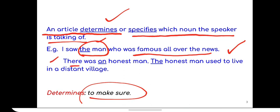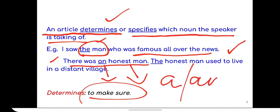Second one is there was an honest man. So do we know which honest man? No, we don't know, right? We don't know him and therefore we use an before it. A and an, these are used when we introduce an object or a noun for the first time. Now the second time when it is introduced, like the honest man, the honest man used to live in a distant village. So now we know this honest man and therefore we use article the before it.